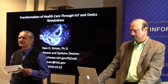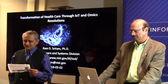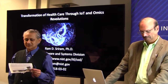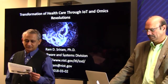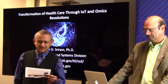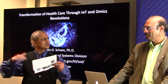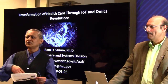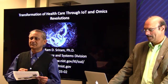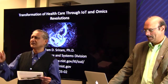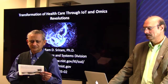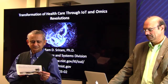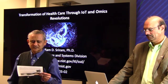We are delighted to have Ram Sriram here. Ram has an extensive resume — he is currently the division chair of the Software and Systems Division of the Information Technology Laboratory at NIST. Earlier he was also heading a group in the manufacturing area. NIST has had a big play in manufacturing and related protocols. Before that, he was an engineering faculty at MIT, interested in setting up an Intelligent Engineering Systems Laboratory.